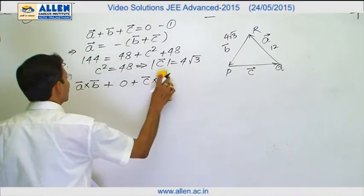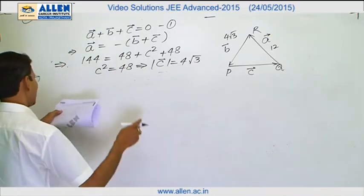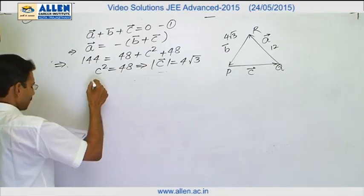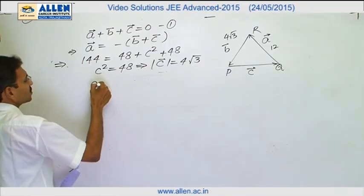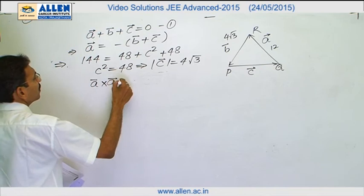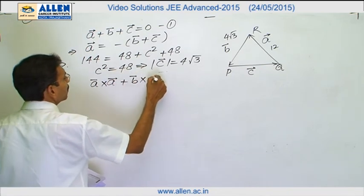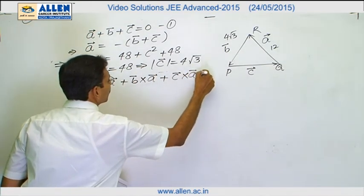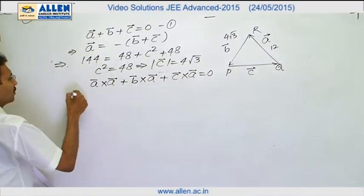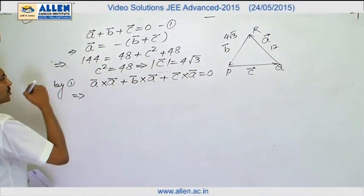Now we need the cross product of this relation with vector a rather than vector b. So it is a cross a plus b plus c cross a plus c cross a equals to null vector. This is by 1, equation 1.